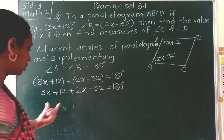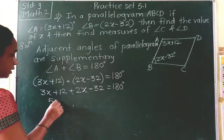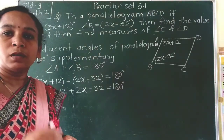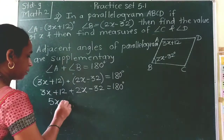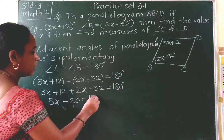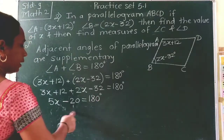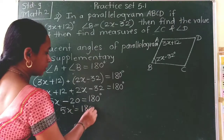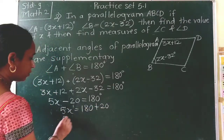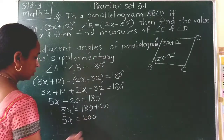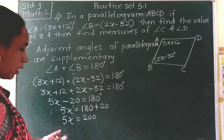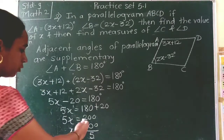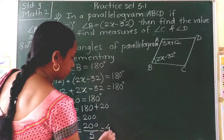Adding like terms: 3x plus 2x gives 5x, and 12 minus 32 gives negative 20, so 5x minus 20 equals 180 degrees. Transferring 20 to the other side: 5x equals 180 plus 20, so 5x equals 200. Therefore x equals 200 divided by 5, which gives x equals 40.